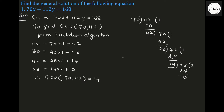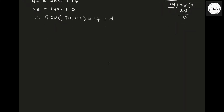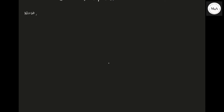What is C in this equation? C is 168. We need to check whether D (the GCD) divides C or not. Does 14 divide 168? Yes — when 14 divides 168, you get 12. Therefore, the given linear Diophantine equation 70x plus 112y equals 168 has a solution.